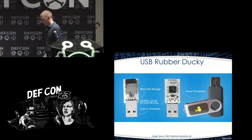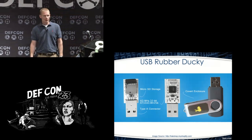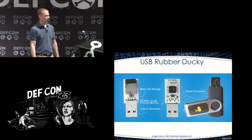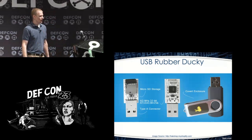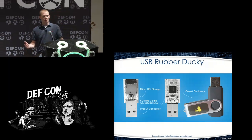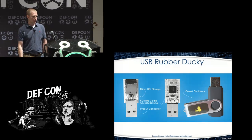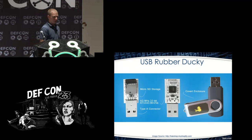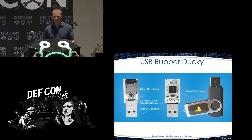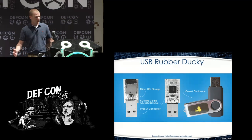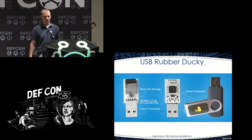Here's what the Rubber Ducky looks like. You'll notice it has a very common form factor — similar to vendor swag USB drives you'd find at IT security trade shows. Inside the enclosure there's a micro SD card storage area as well as a little 32-bit microprocessor chip, which drives the memory and logic functionality.